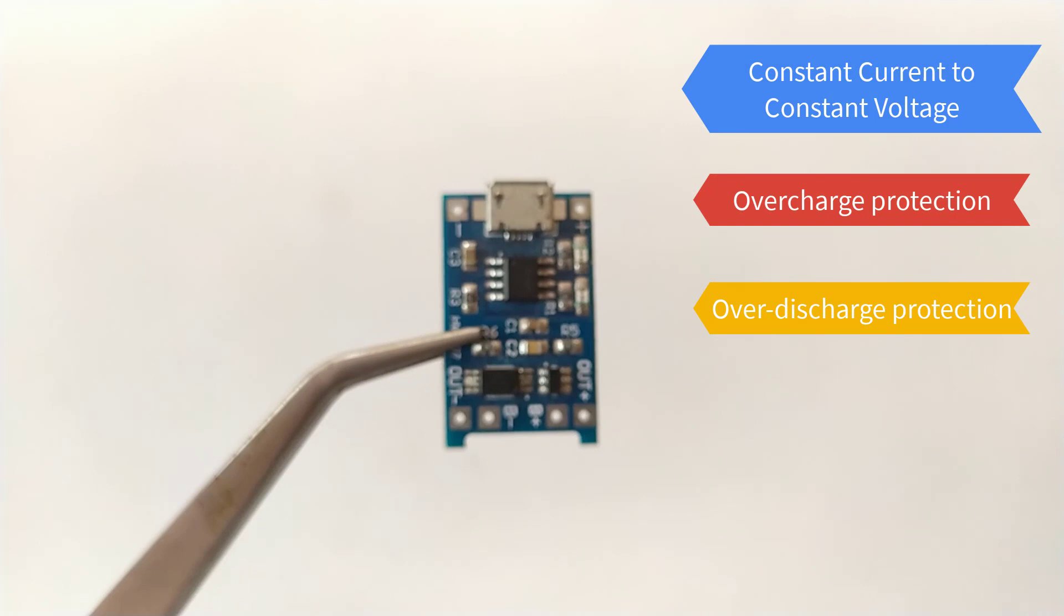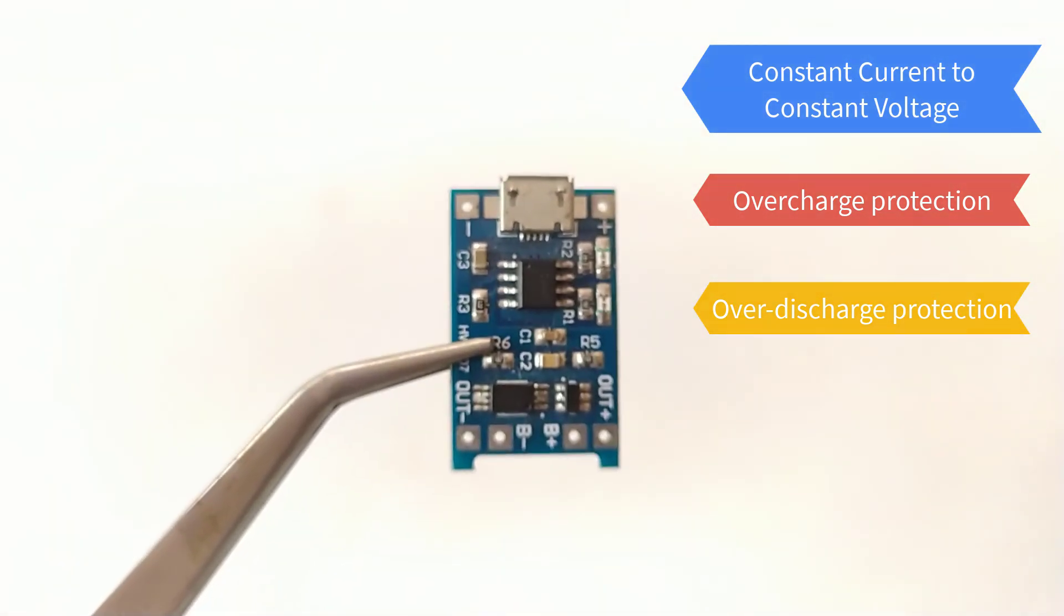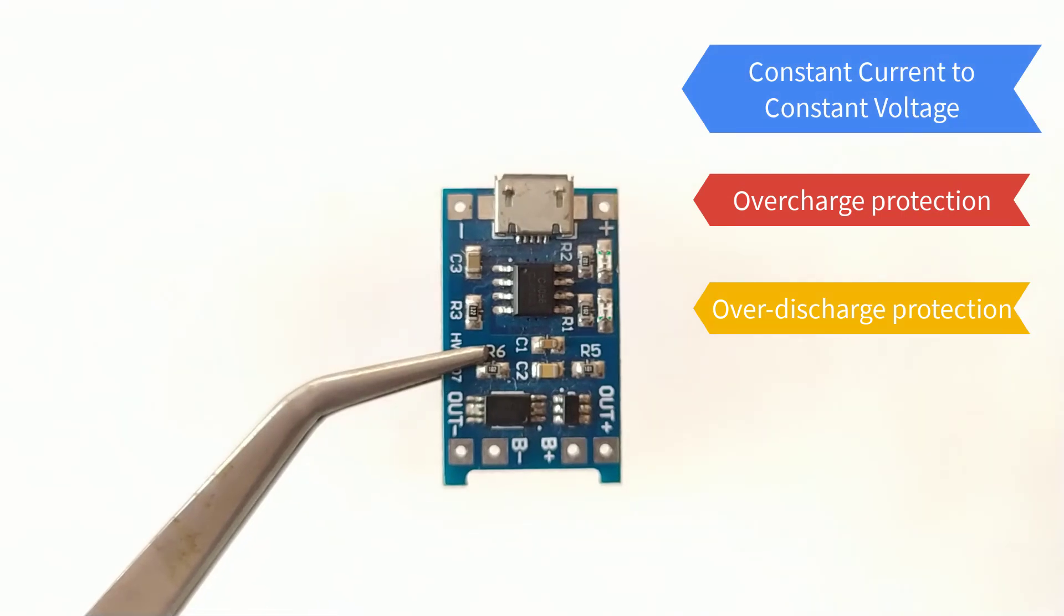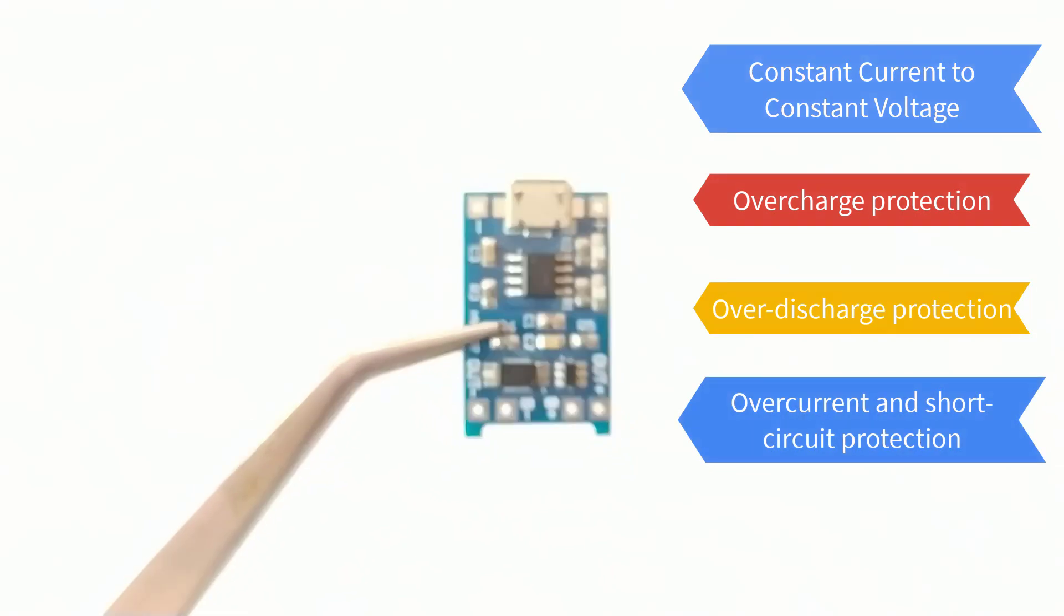Over discharge protection. Keeps your battery from being discharged below 2.4 volts. 2.4 volts is the healthy minimum voltage level for your battery. Overcurrent and short circuit protection.